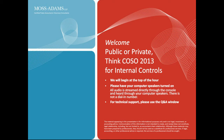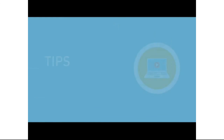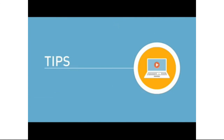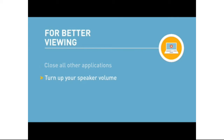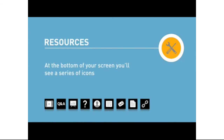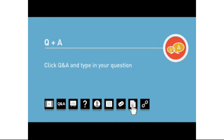Before we get started, we have just a few housekeeping items to cover to improve your webinar session. Moss Adams is pleased to present another in our ongoing series of Continuing Professional Education webcasts. You can customize how you view our presentation and interact with the presenter. For better viewing, close all other applications and turn up your speaker volume. At the bottom of your screen, you'll see a series of icons, each relating to a different aspect of our session. You can click the file folder icon to download the group attendance sheet and a PDF copy of today's slides. You can ask our presenter questions during the webcast by clicking Q&A in the bottom left-hand portion of the icon bar and typing in your question.